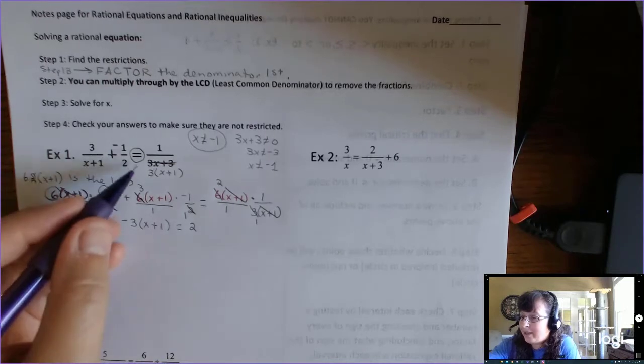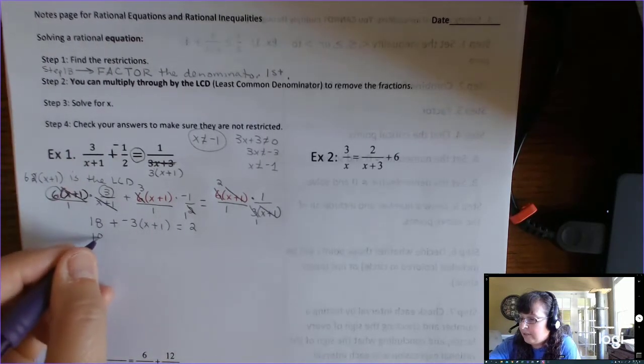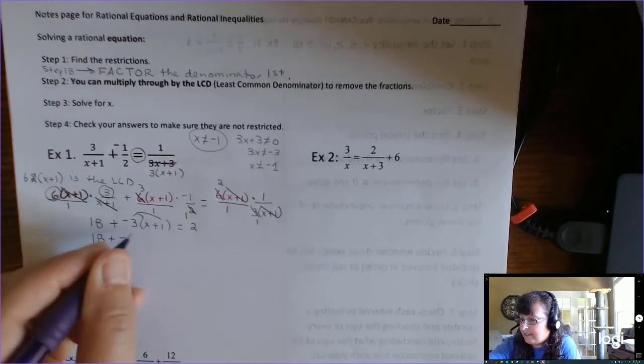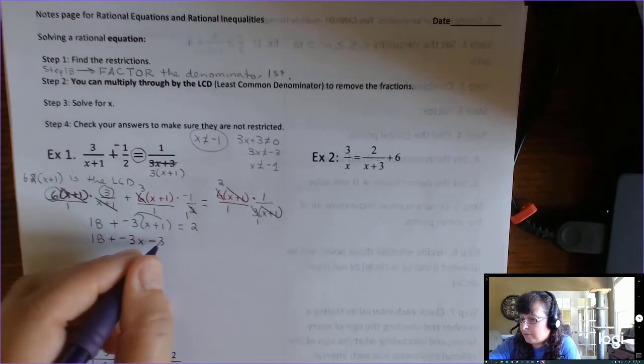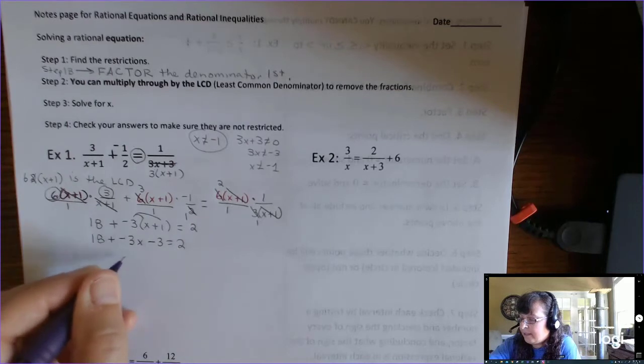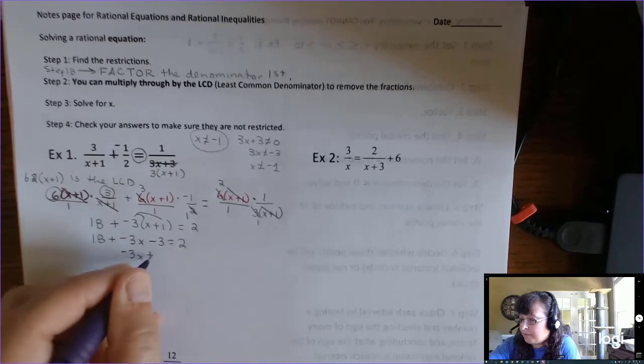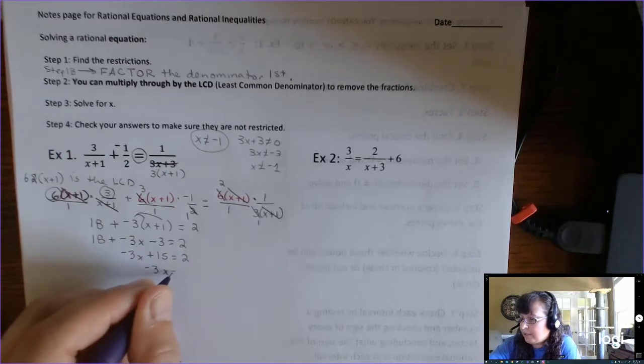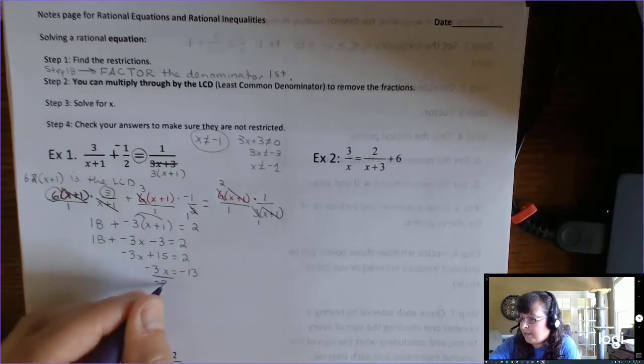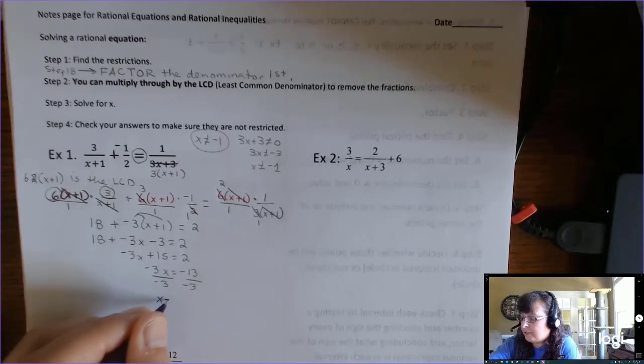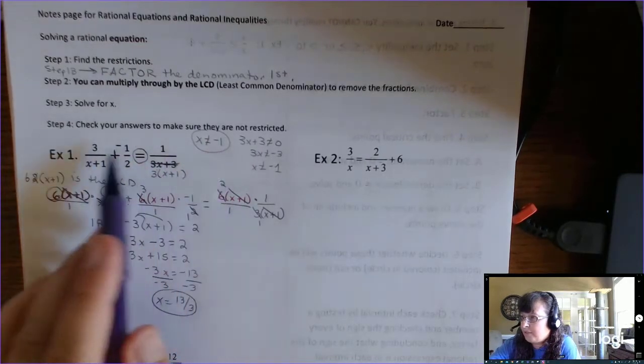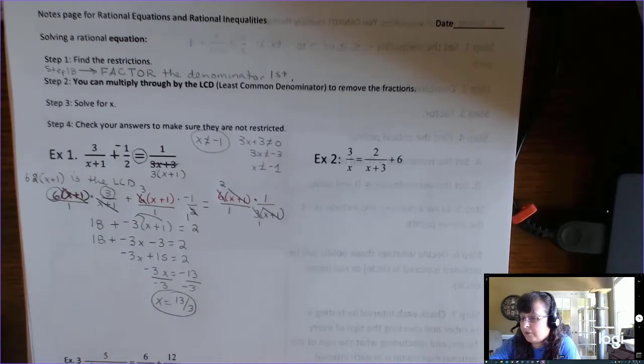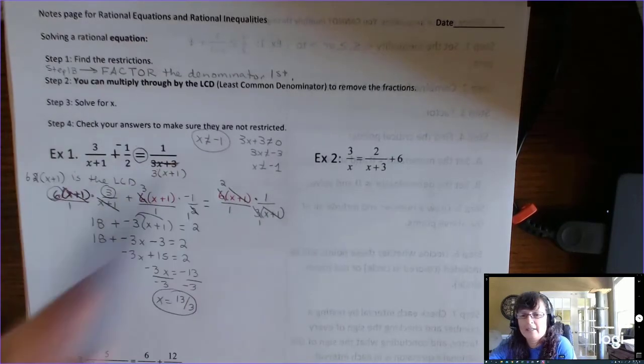So you can do that if you have an equal sign. You can multiply through by the LCD. So if we continue, we get this negative is attached to that 3. So the chances of us losing it go down. Negative 3x minus 3 equals 2. And then you have negative 3x plus 15 equals 2. And then you have negative 3x equals negative 13. Divide by negative 3. And you get x is positive 13 over 3. And as long as this x value is not negative 1, it doesn't give you 0 in the denominator, that's going to work. And you can check it to see if you're algebraically correct by plugging it in. But you really are just checking against that restriction.